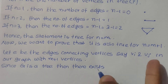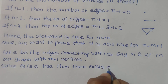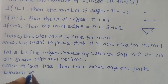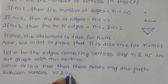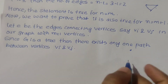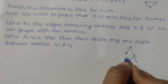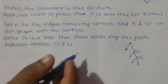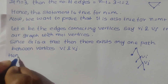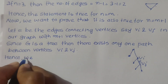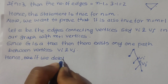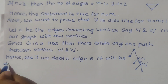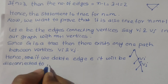Since G is a tree, there exists only one path between vertices vi and vj. If we delete edge e, the graph will be disconnected into two components.